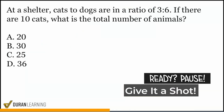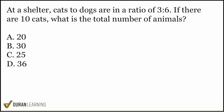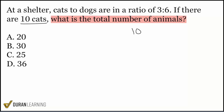All right, here we go — next problem. The first thing we're going to do, as always, is read the question sentence. When we read it, it says: if there are 10 cats, what is the total number of animals? Be careful — it says total number of animals. Keep that in mind. We have 10 cats given to us right here at the beginning.